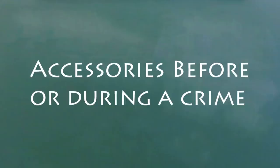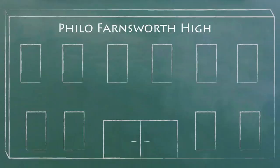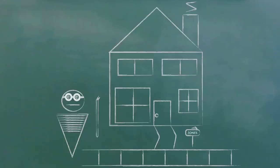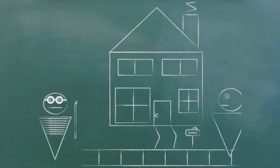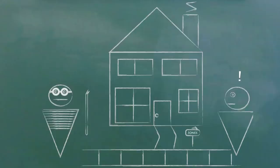Accessories who help before or during the crime are also usually called principals. So how do you become this kind of accessory? Well, first, you need the right intent. You need to intend for a crime to be committed and also intend to assist in the commission of that crime.